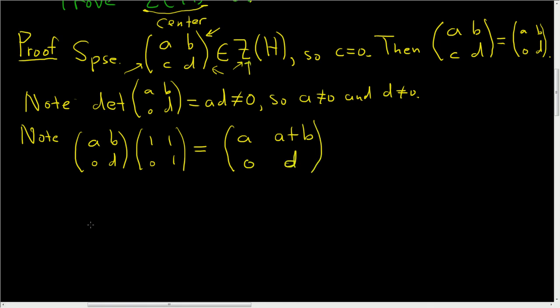Multiplying it the other way, we have (a, b; 0, d) times (1, 1; 0, 1). Looks like we'll get a again, and this time we get b+d. Then over here we get 0, and here we get d.